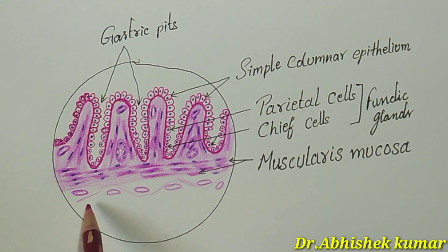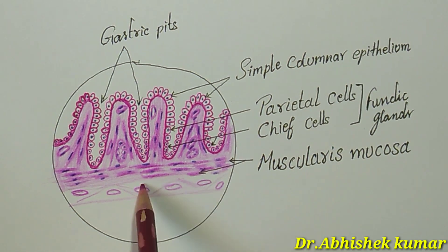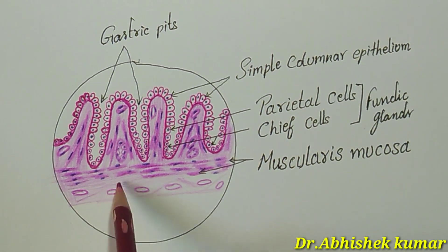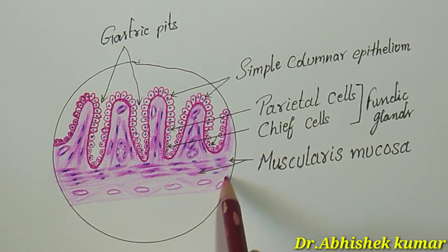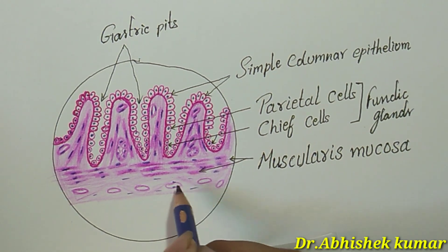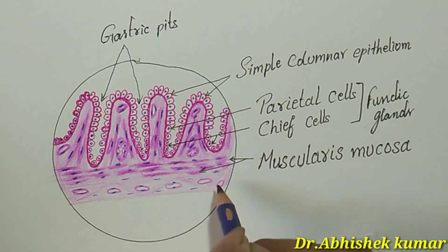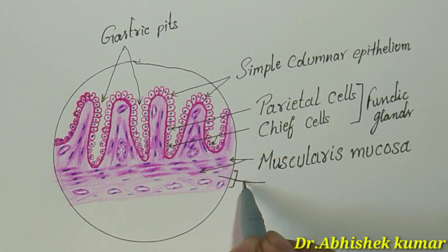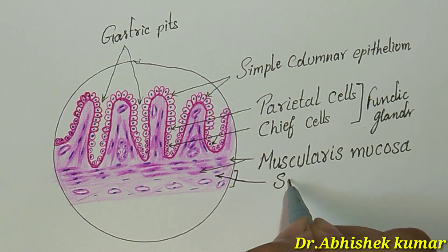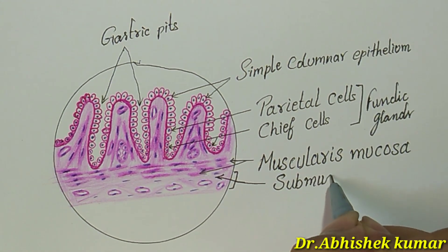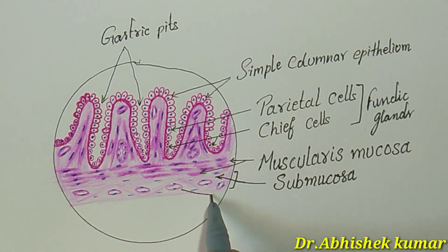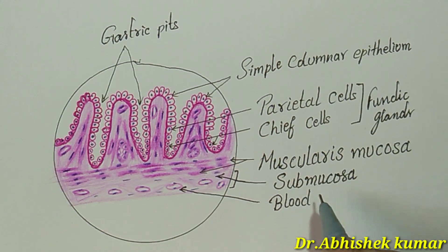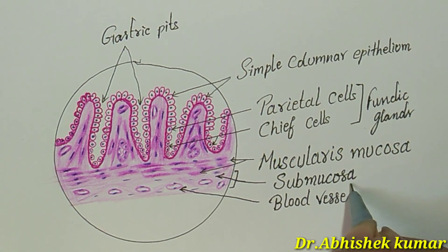Below the muscularis mucosa we have the submucosa. Blood vessels are present in the submucosa — this is the general plane of the gastrointestinal tract. Here we are labeling the submucosa and its blood vessels, which are round and circular in cross-section.